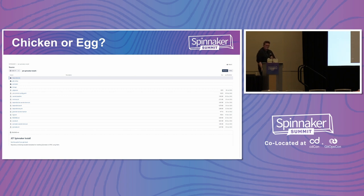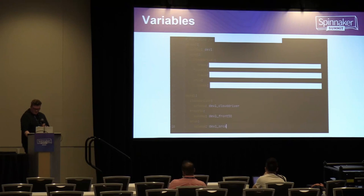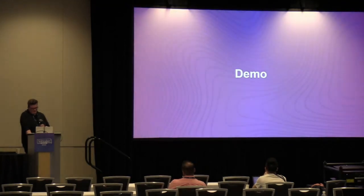A new environment is just one variables file. For example, here we've got configuration for MySQL for Clouddriver, Front50, and Orca. With Kustomize that would be three patches, one for each of those services. Here it's just one variables file — you plug in the values and they get injected.